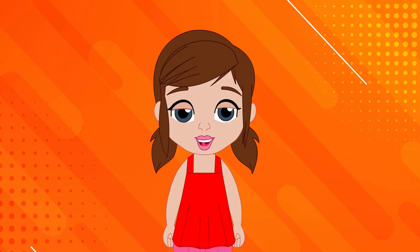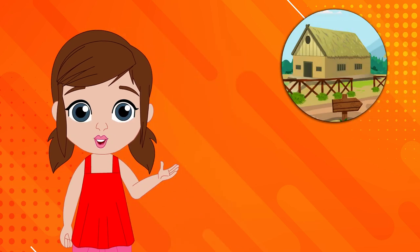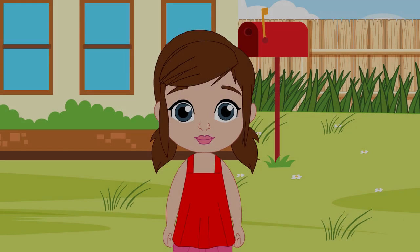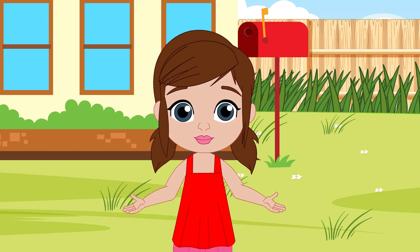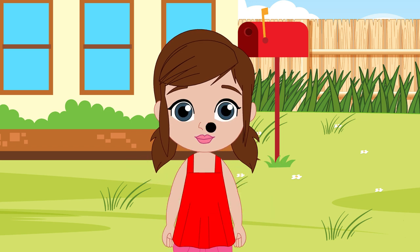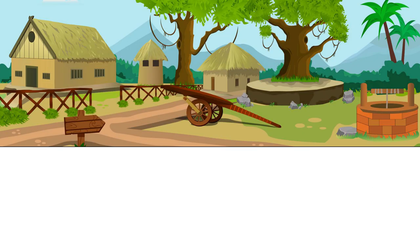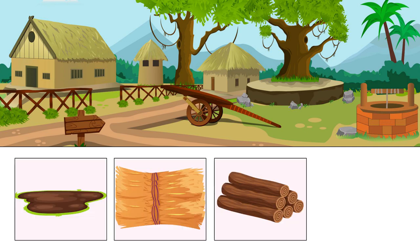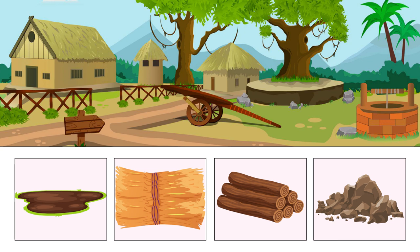There are two types of houses. One is Kaccha house and the other is Pakka house. Let us see what a Kaccha house is. This is a Kaccha house. Kaccha houses are made using mud, straw, wood and stones.